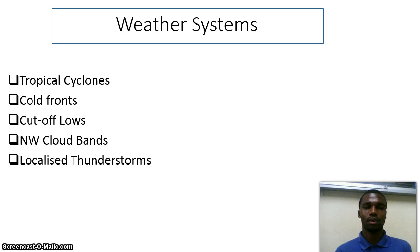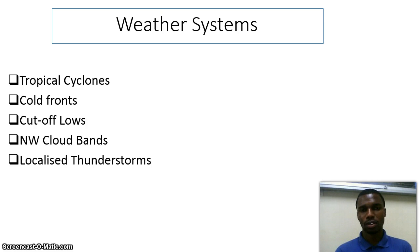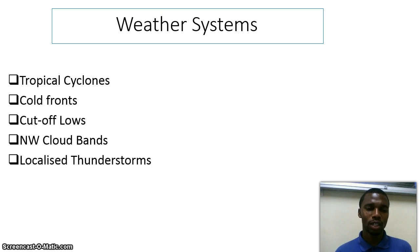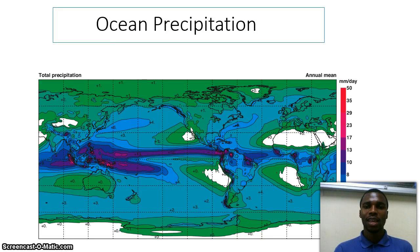The wind systems are the types of wind systems associated with oceans and the atmosphere of Southern Africa. We have: number one, tropical cyclones; number two, cold fronts; number three, cut-off lows; and number four, northwest flows, and then we also have localized thunderstorms.